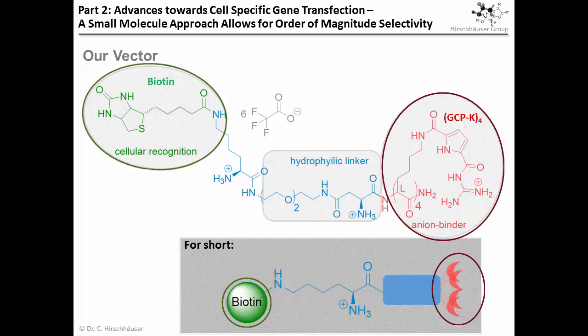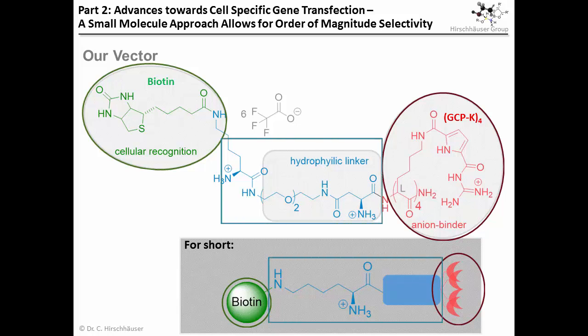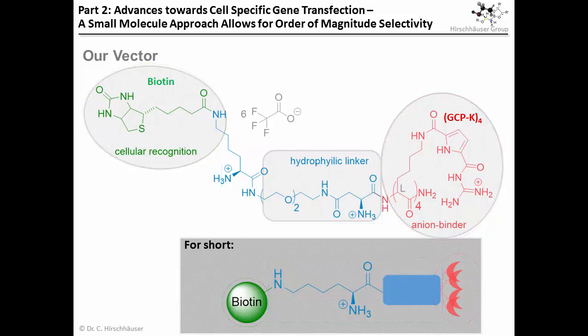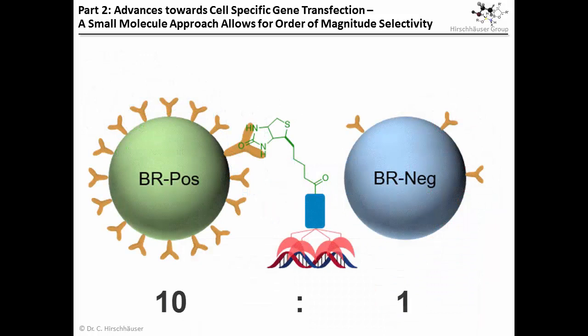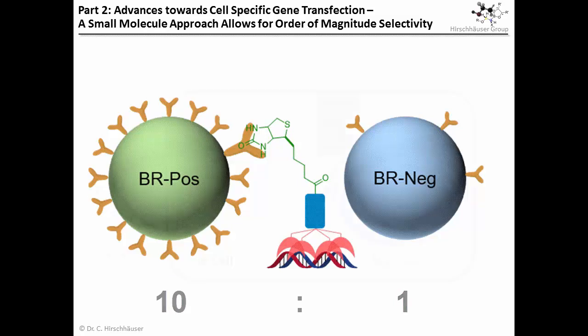The resulting small molecule vector is of similar size to a lot of targeting moieties. We chose biotin, as biotin receptors are overexpressed on a lot of cancer cell lines. Connecting the two components with a suitable linker took some development — length, water solubility, and number of charges had to be optimized. With the final vector, we were able to achieve a tenfold cell activity for cell lines which overexpress biotin receptors over suitable controls.